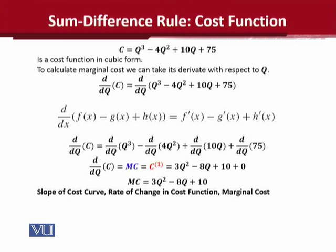What you see here is we have the cost function of four terms, and the operator is now appearing with all of the terms. After the differentiation of the cost function, the result is 3q squared minus 8q plus 10 plus 0. One should know the power rule and the constant function rule to apply and solve it.